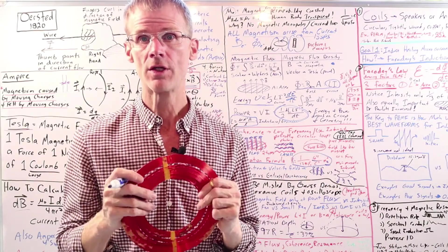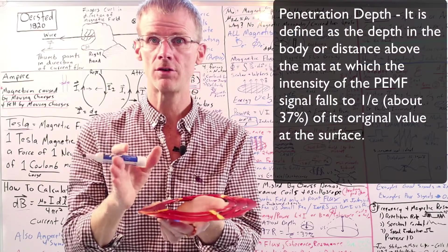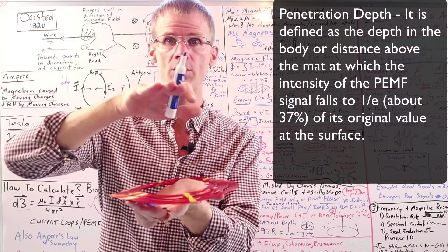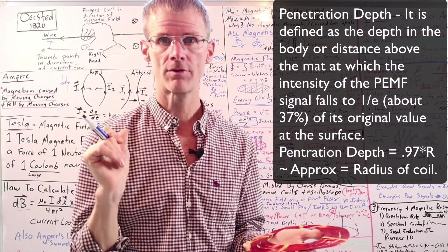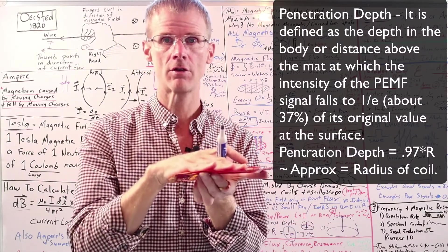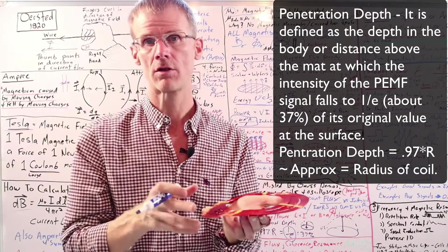Okay, now I want to talk about penetration depth because this is something that's very important. Penetration depth is an engineering term, and it's basically the distance with which the field falls to 1 over E. And I did the calculations with the Biot-Savart law for a perfectly circular current loop. It's actually proportional to the radius of the coil. 0.97 is very close to 1.